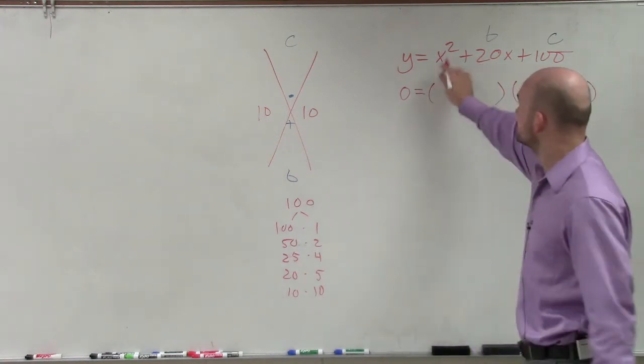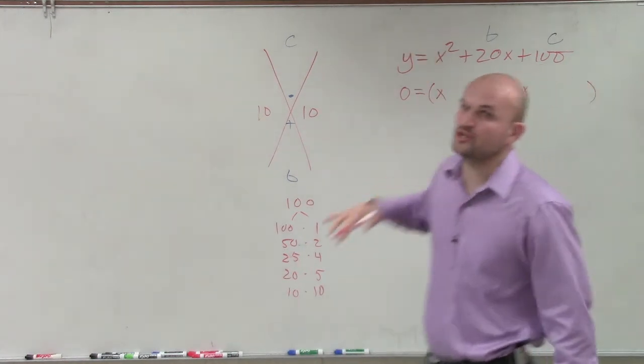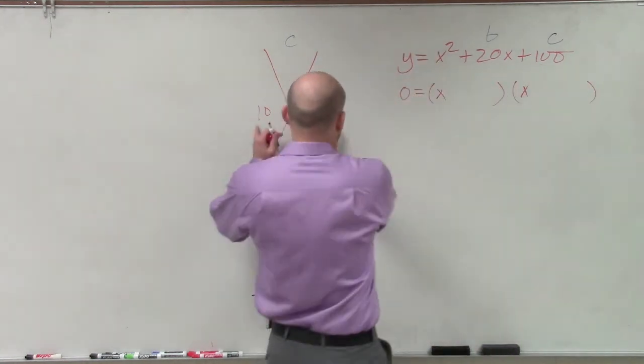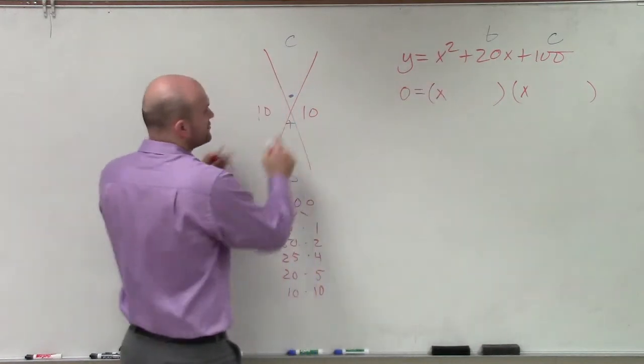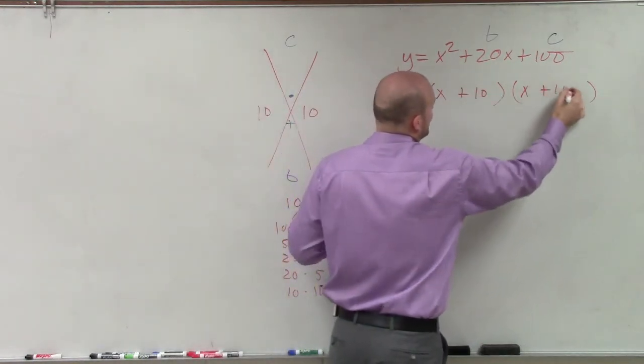I know that the first two terms have to be x and x, because my a equals 1. So these two first two numbers have to just multiply to give me x squared. Then I just take my two factors. Since my middle term is positive, these two factors also have to be positive. So that's going to be an x plus 10 and an x plus 10.